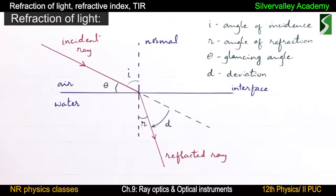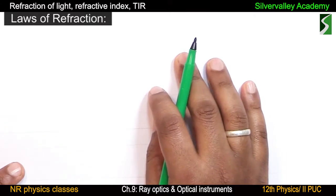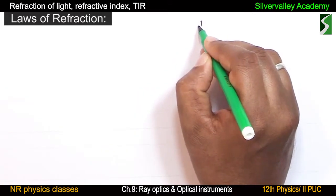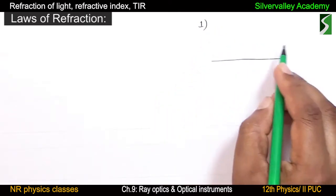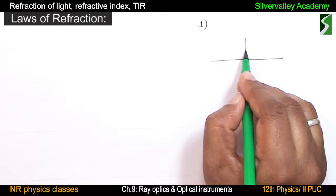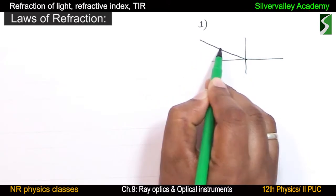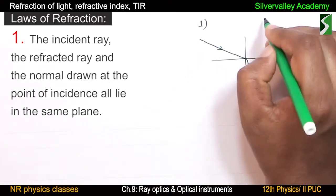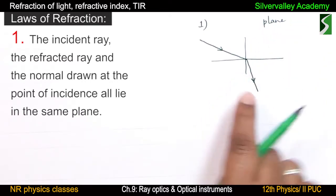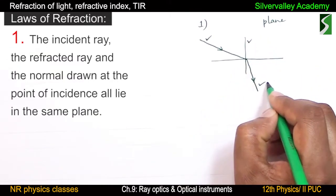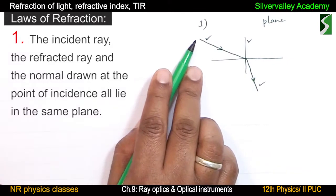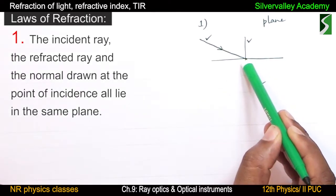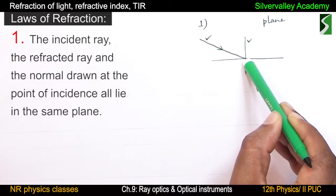Now, laws of refraction. First law: the incident ray, refracted ray, and the normal drawn at the point of incidence all lie on the same plane — the plane of the paper. So if the ray is confined to the paper and the normal is drawn on the paper, then the refracted ray cannot come out of that plane.